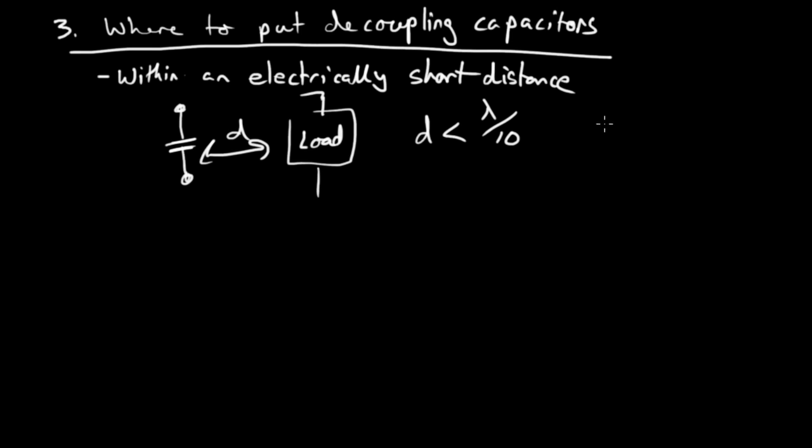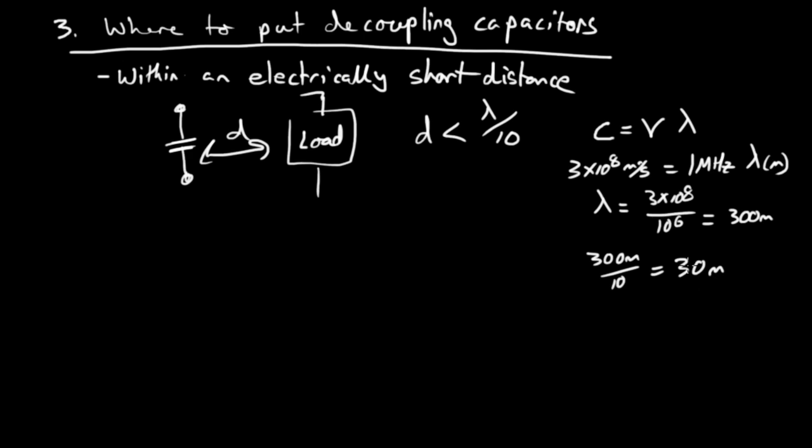So for instance, if this was 3 times 10 to the 8th meters per second in vacuum and we're operating at 1 megahertz and there's lambda in meters, we would solve for lambda equals 3 times 10 to the 8th divided by 10 to the 6th equals 300 meters.